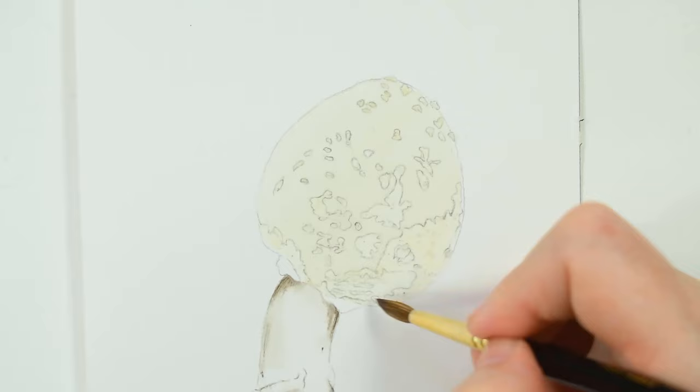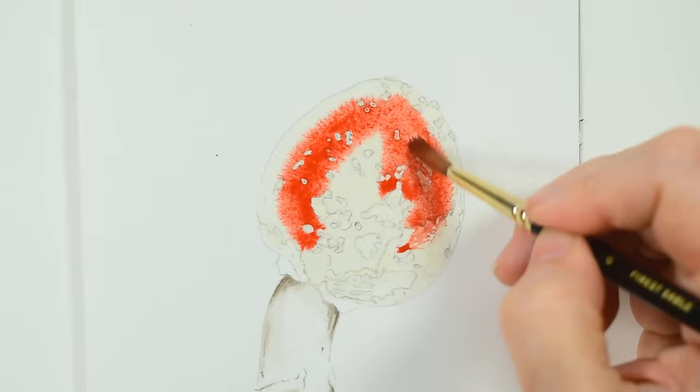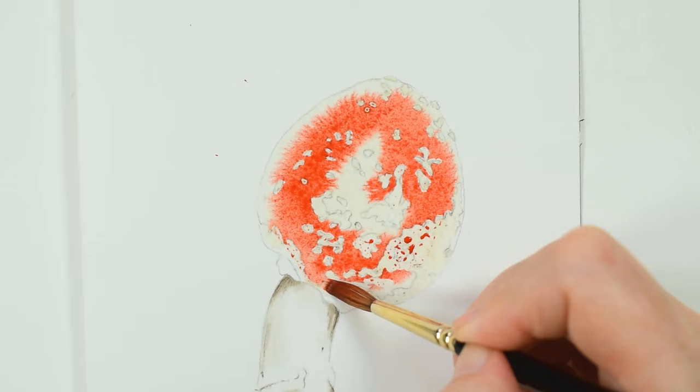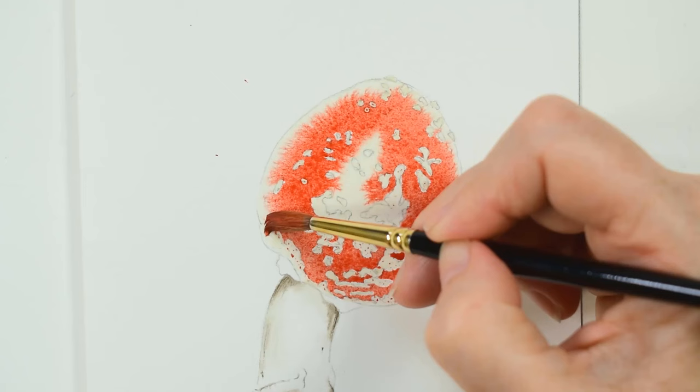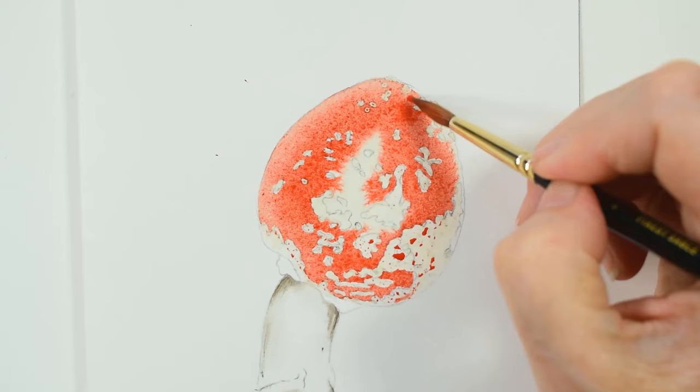Then taking a thick mix of my red paint, I apply it to the cap. Now as you can see, I'm leaving the central area lighter for the moment so that I can create a paler area of red here, and I'm carefully working around my edges.